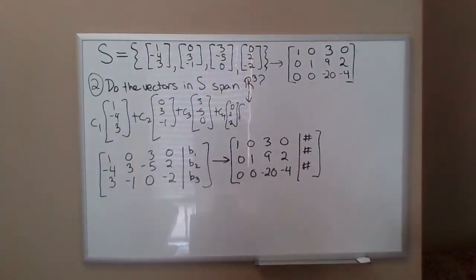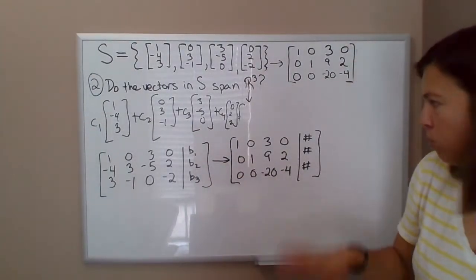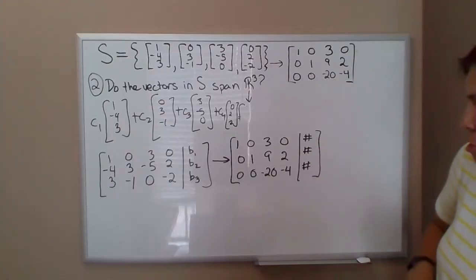We don't really need to figure out exactly what they are, because we're allowing B1, B2, B3 to be any number. So this is just any value for each of these entries in the last column.